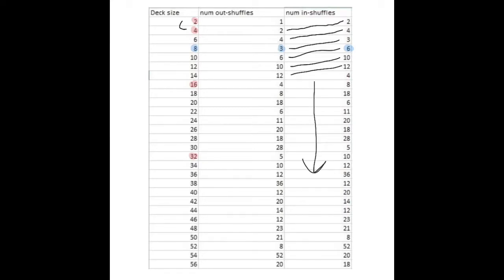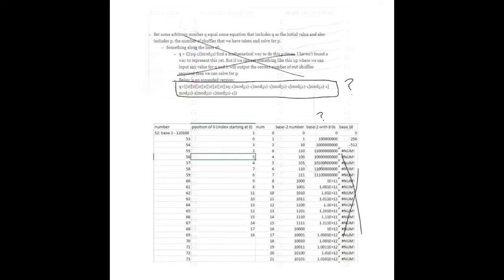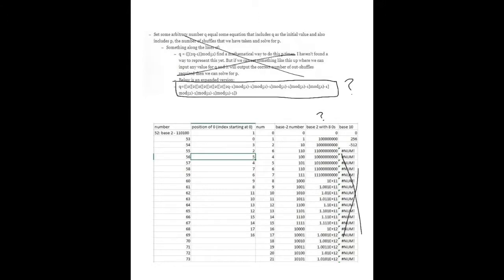Despite these two patterns we discovered, we were still unable to predict the number of out or in shuffles required depending on deck size, so we set out to find a formula that would generate these values as a function of deck size. We took many different approaches, and after many failed attempts, we eventually found something that seems to work. The key was finding an expression that would give us the position of the card depending on the original starting position, the number of shuffles performed, and the deck size. We came up with a piecewise function that gives the new position of the card as a function of the original position. Here is an example for an out shuffle for a deck of 52 cards.